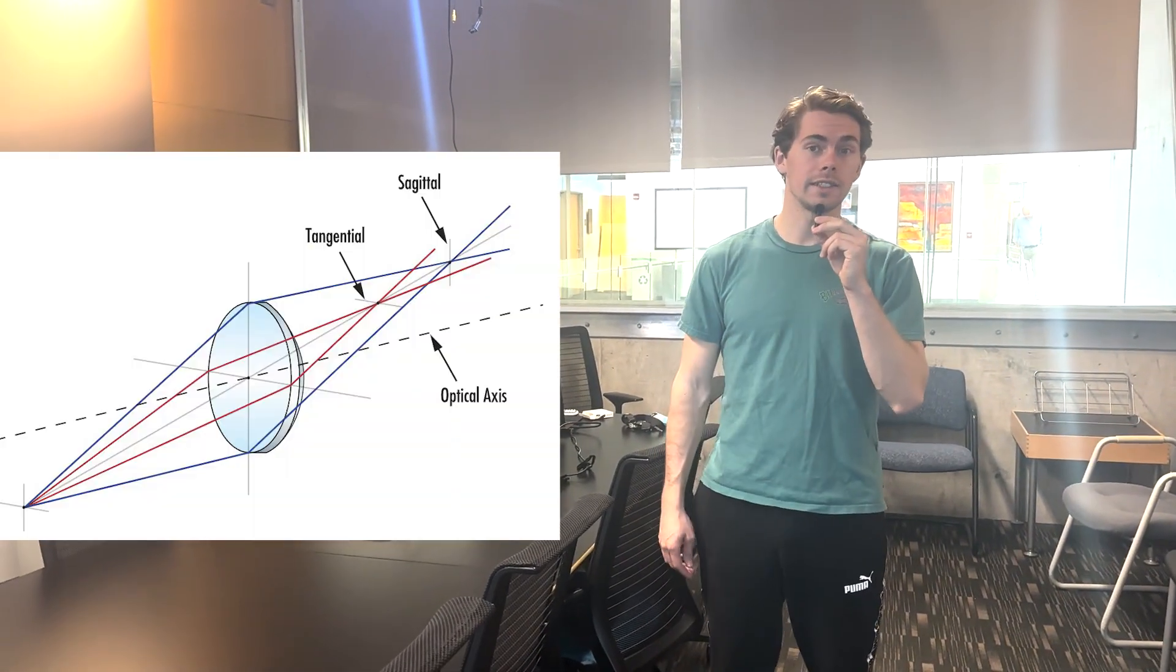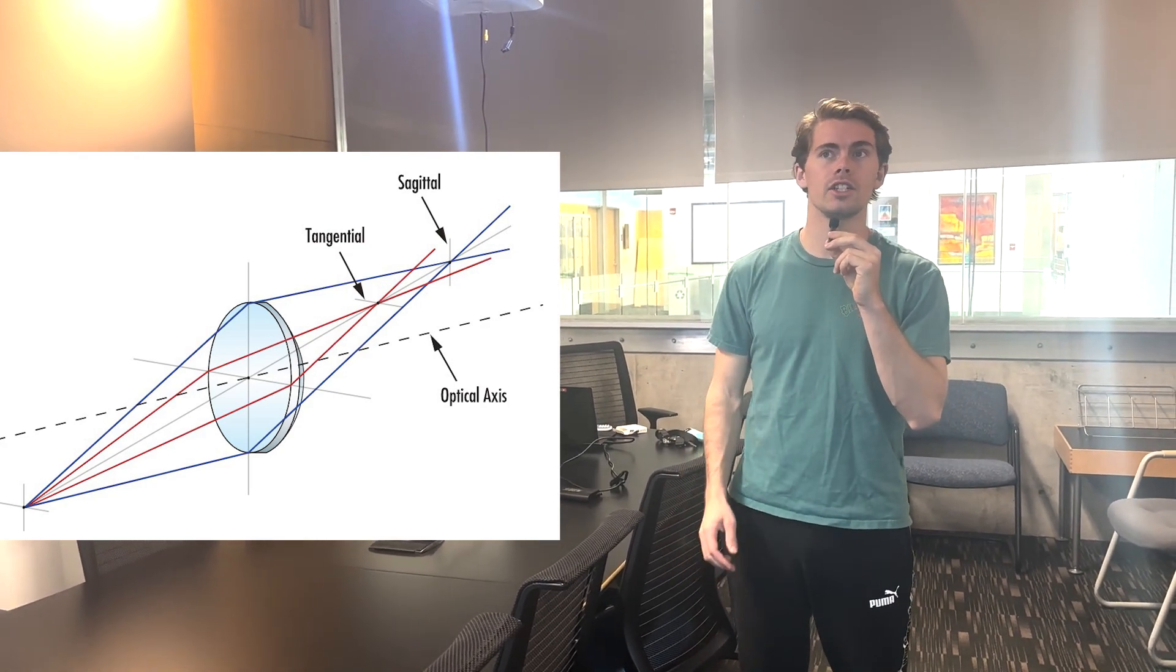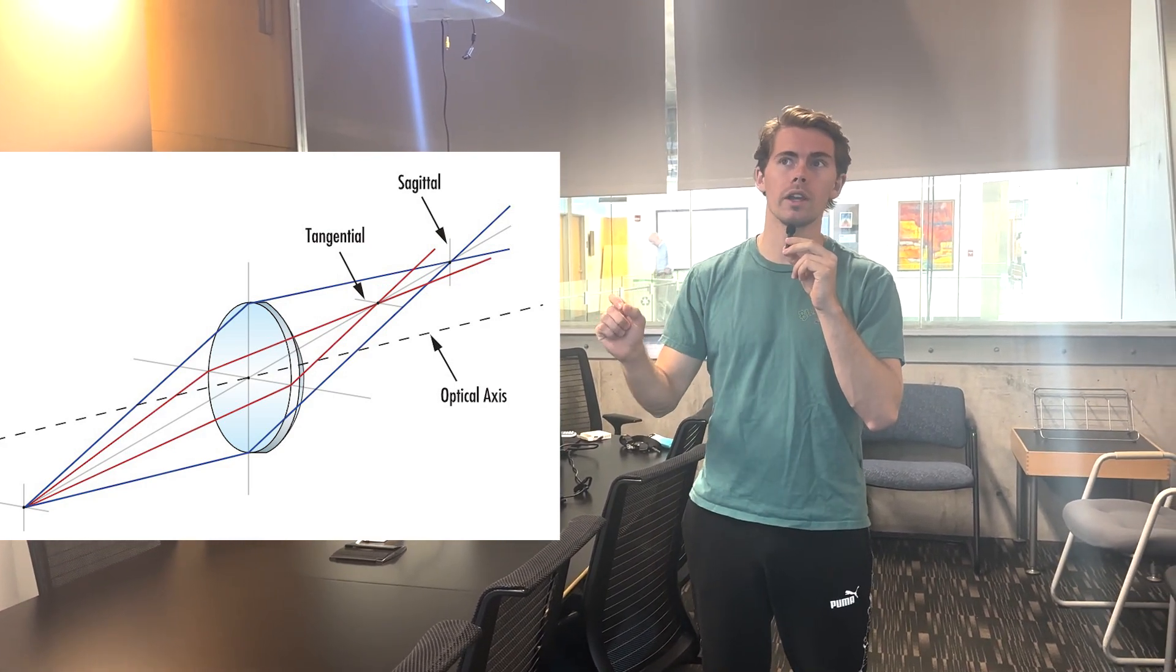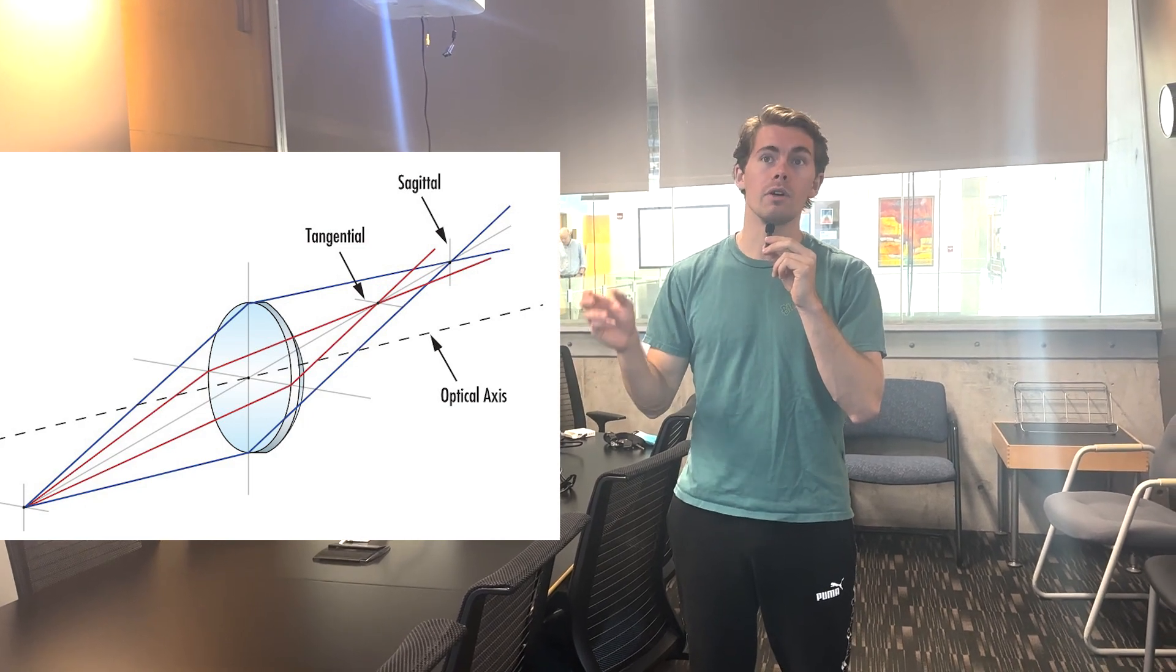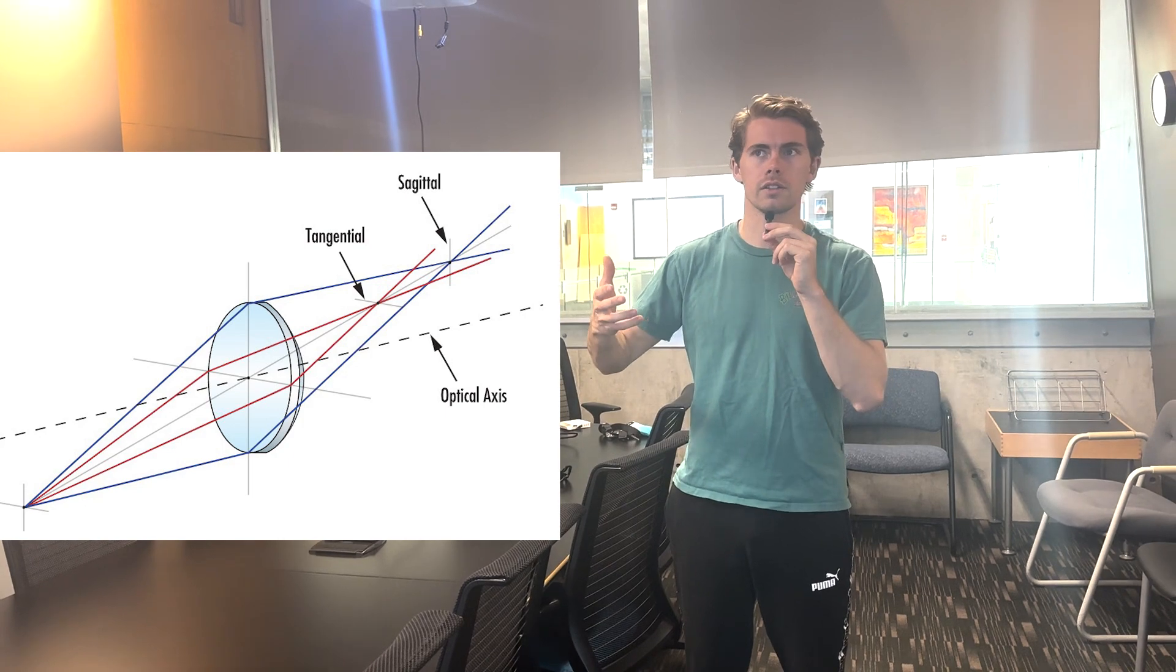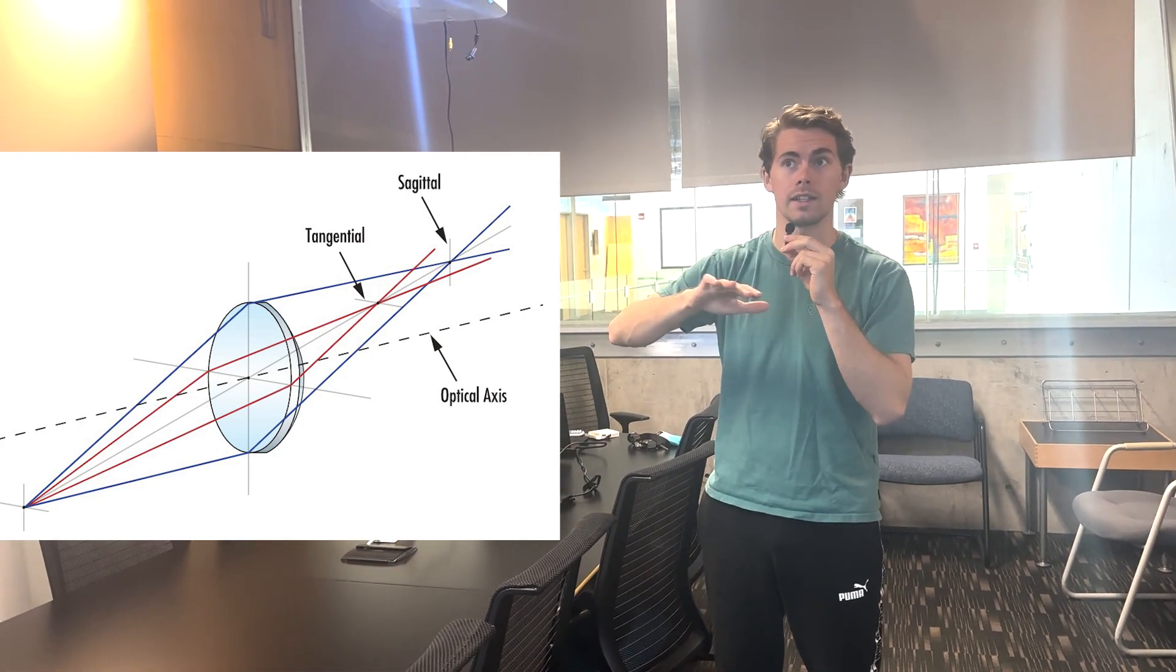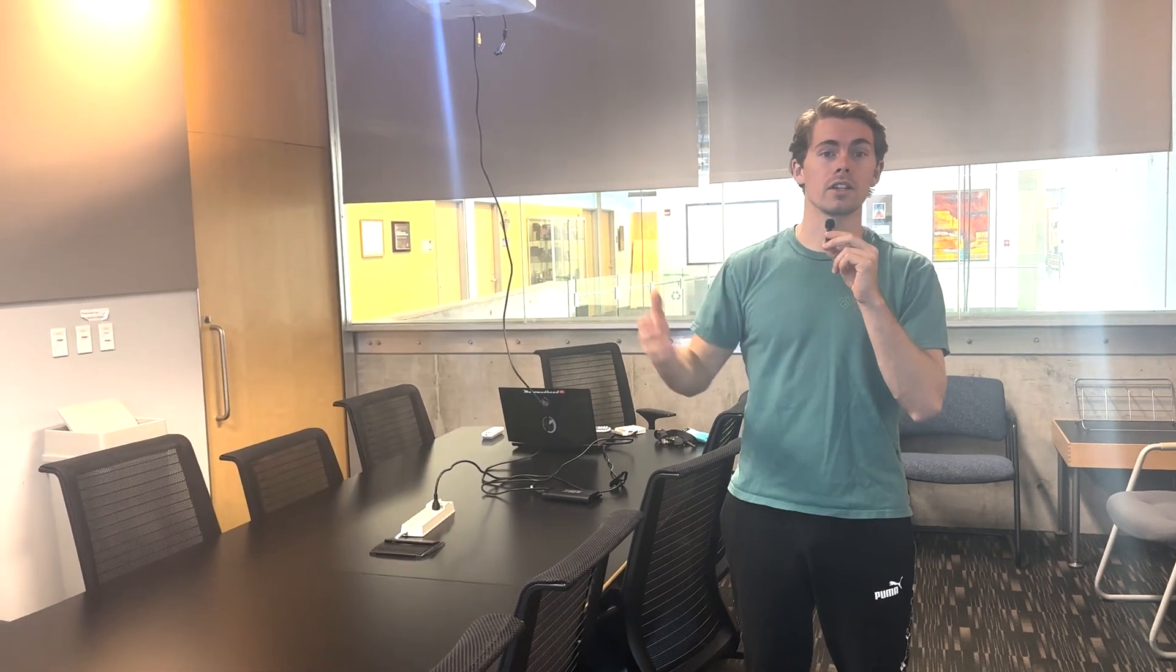Astigmatism occurs when the tangential and sagittal rays focus at different distances. With pure astigmatism, tangential rays focus onto a perfect point at the tangential focus, but form a vertical line at the sagittal focus. And then the sagittal rays are focused onto a perfect point at the sagittal focus, but a horizontal line at the tangential focus. The sagittal focus will coincide with the paraxial focus.